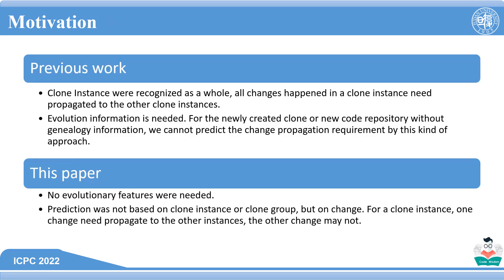In previous work, clone instances were recognized as a whole. All changes happening in a clone instance need to be propagated to the other clone instances. At the same time, evolution information is needed for a newly created clone or new code repository without genealogy information. We cannot predict the change propagation requirement by this kind of approach. So in this paper, we try to overcome these problems.